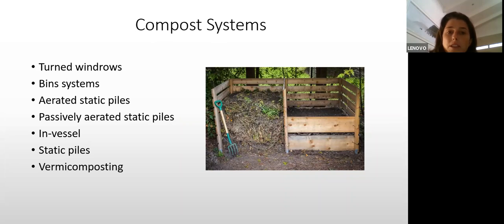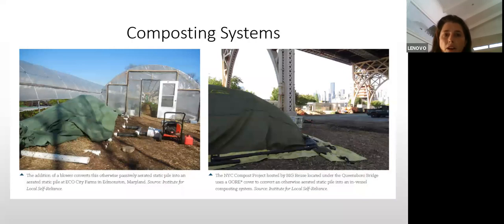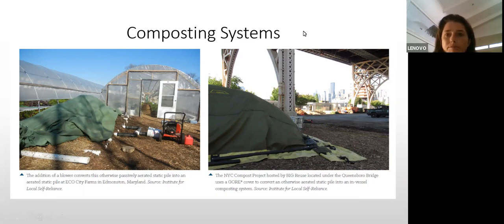There are many compost systems to choose from — turned windrows, aerated static piles, passively aerated static piles, in-vessel systems, static piles that are neither turned nor aerated, and vermicomposting systems. You need to choose the correct system for your situation. Here are examples of composting facilities — this one in New York City under the Queensborough Bridge uses a vortex cover for aeration.